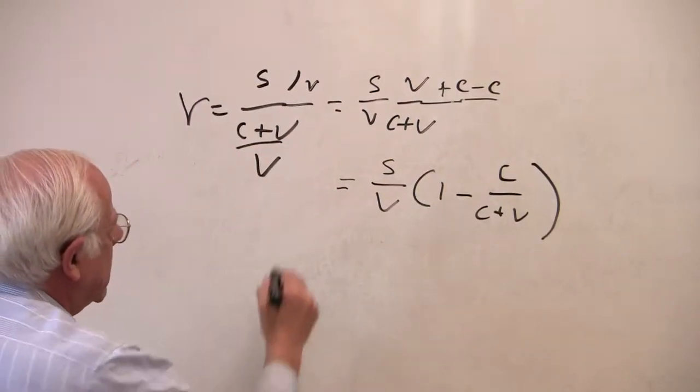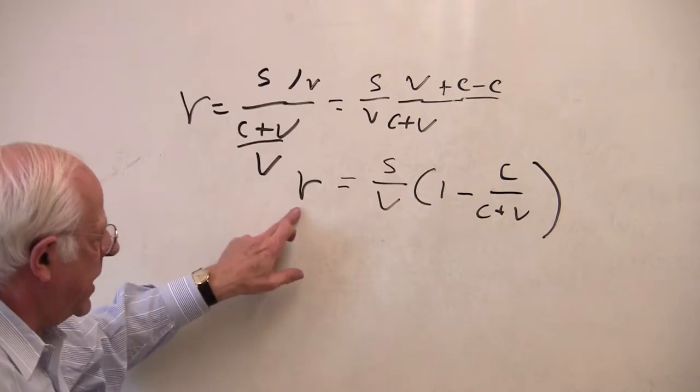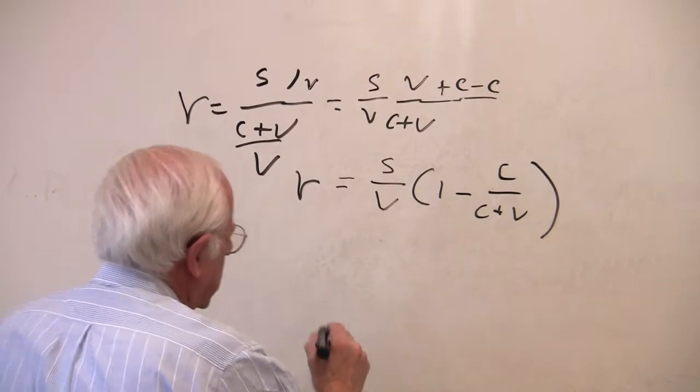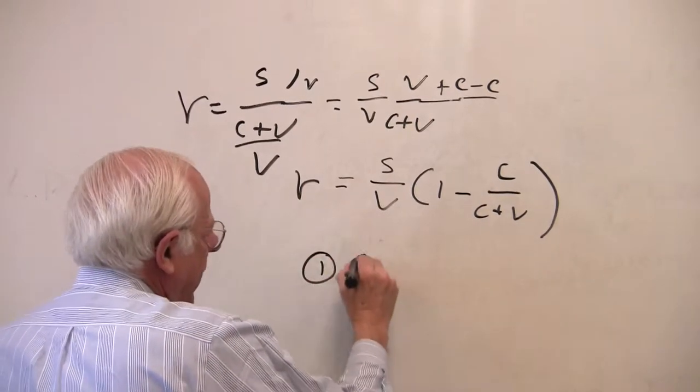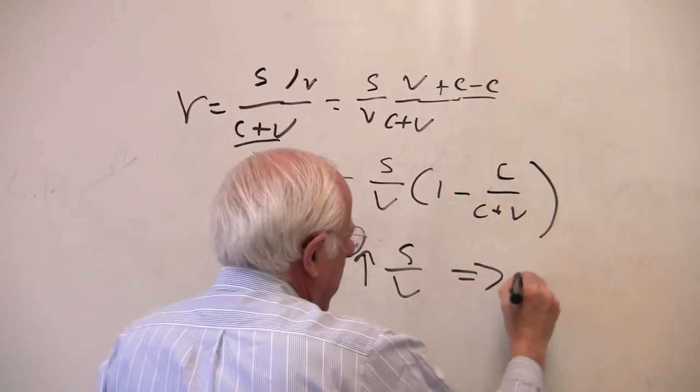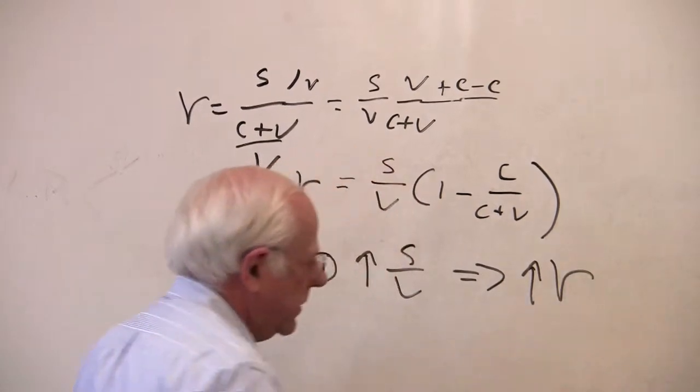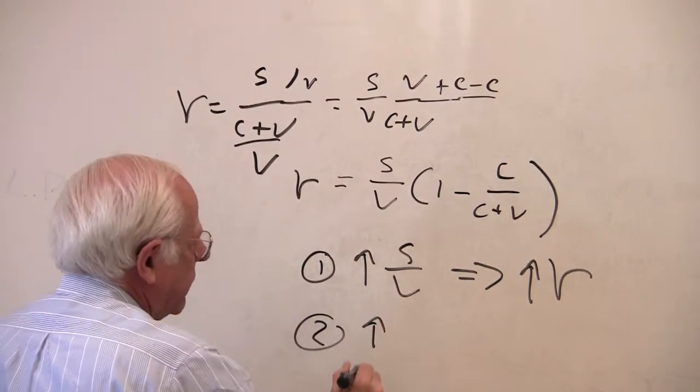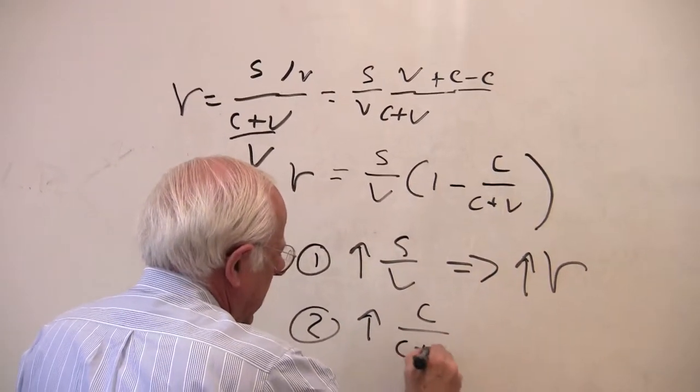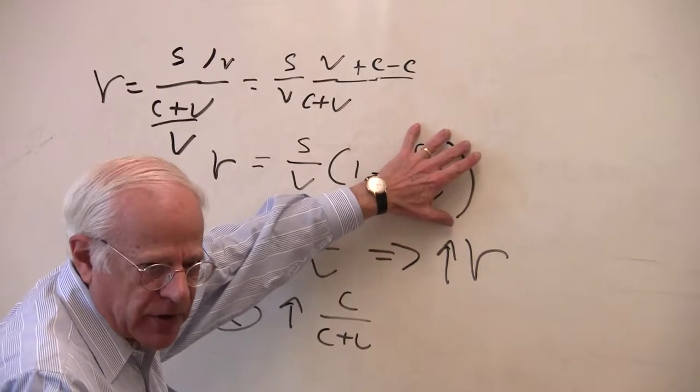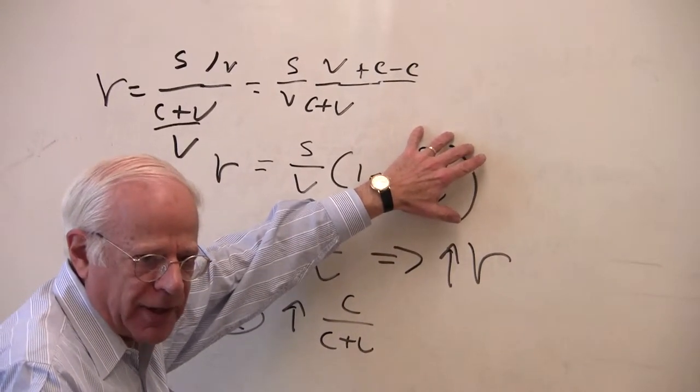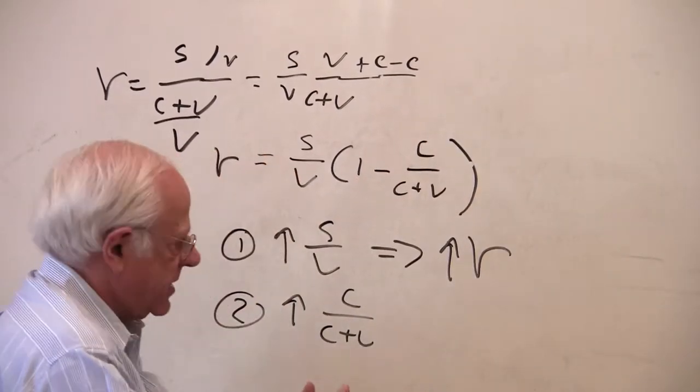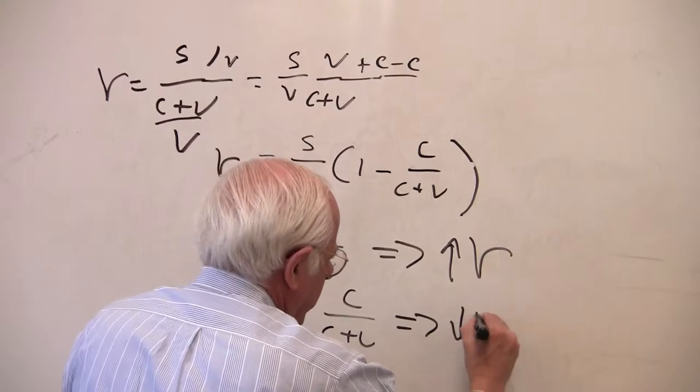So now I've got a formula for the rate of profit which combines together my two other indices. What does this say? One, a rise in the rate of exploitation implies an increase in the rate of profit. Number two, a rise in the composition of capital, what Marx calls the composition of capital, what I called the index of mechanization, implies a fall in the rate of profit.